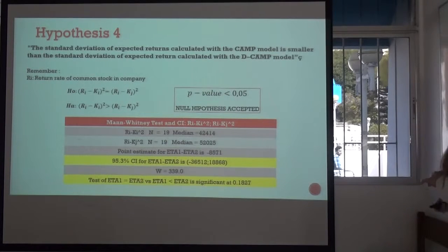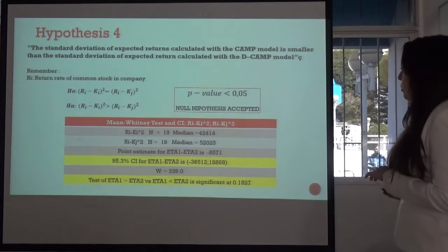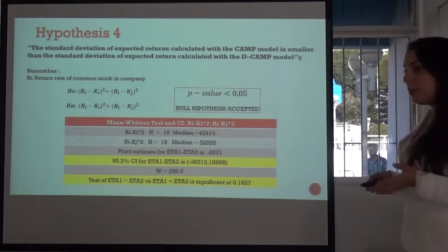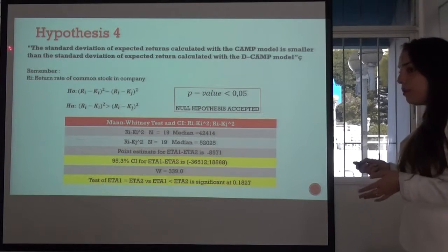the variance between the 19 automobile manufacturing companies were measured. This is the test. And the result is p-value higher than the level of trust. Therefore, the null hypothesis is accepted. And the fourth hypothesis is rejected.